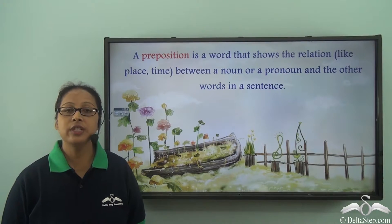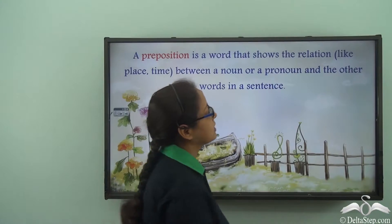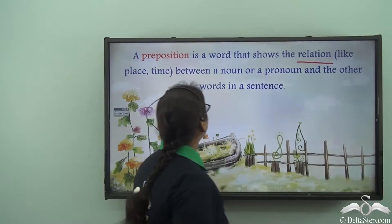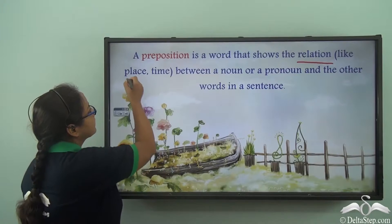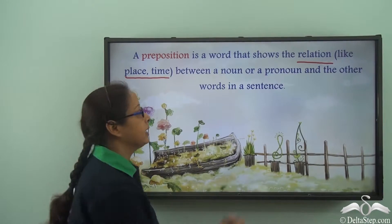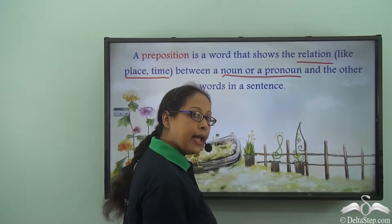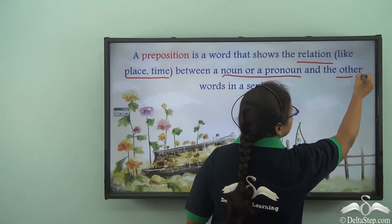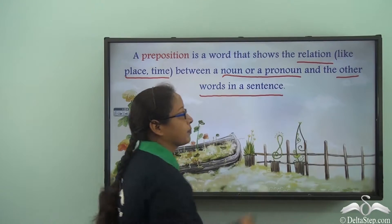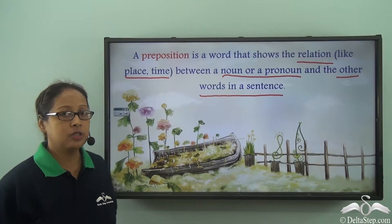A preposition is a word that shows the relation — like place or time — between a noun or a pronoun and the other words in a sentence. Today we are going to learn some more prepositions.